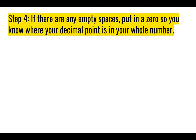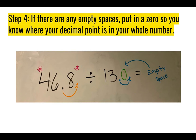Step four: if there are any empty spaces, put in a zero so that you know where your decimal point is in your whole number. When I moved the decimal point in my number 13, there was a big empty space — I can't write '13 [space] decimal point.' Instead I had to write 13 and a zero and then the decimal point, so my new number becomes 130. Make sure your paper looks like this now.